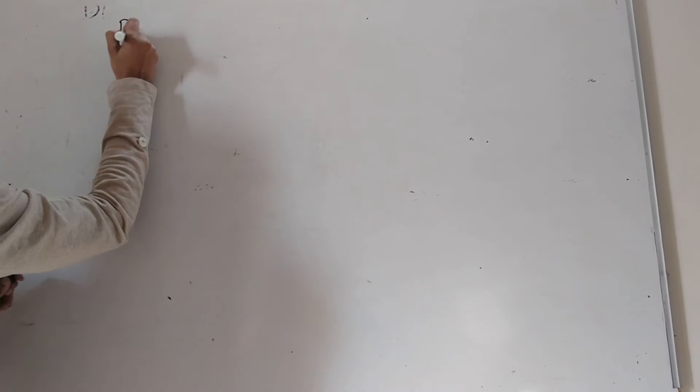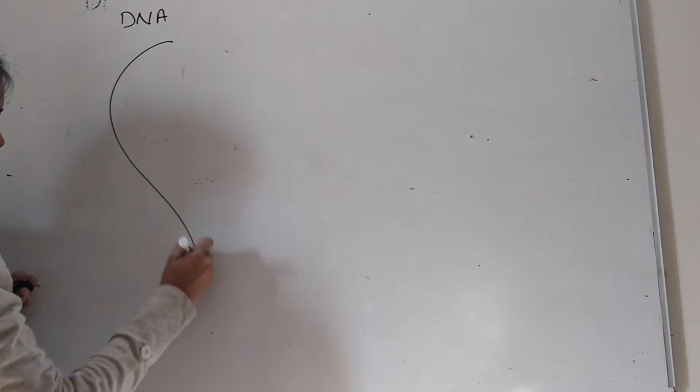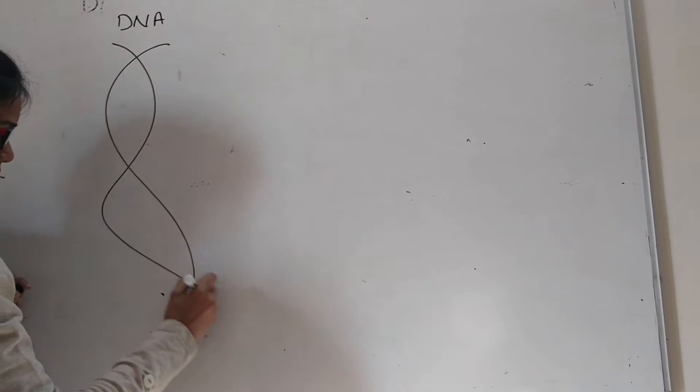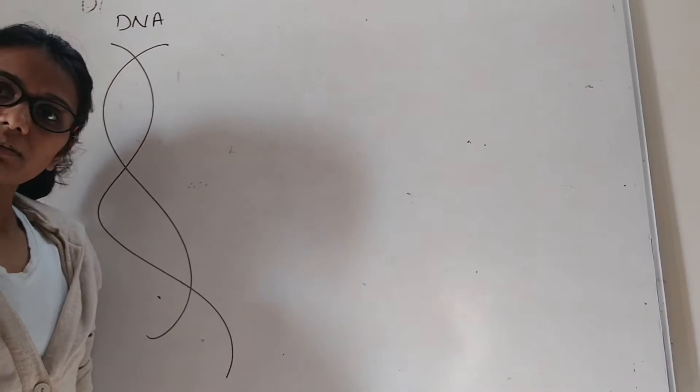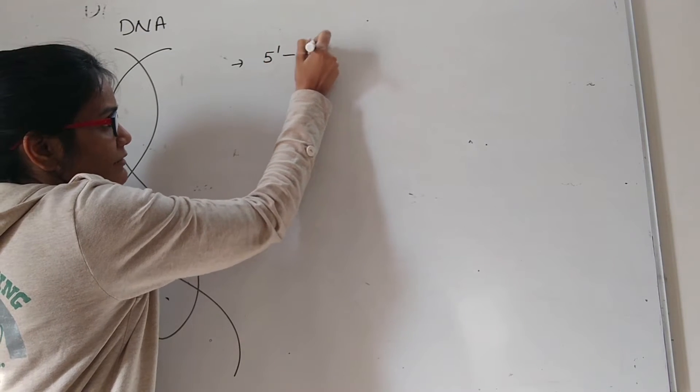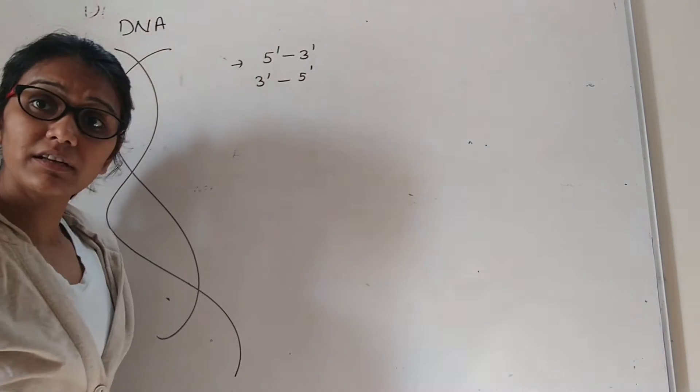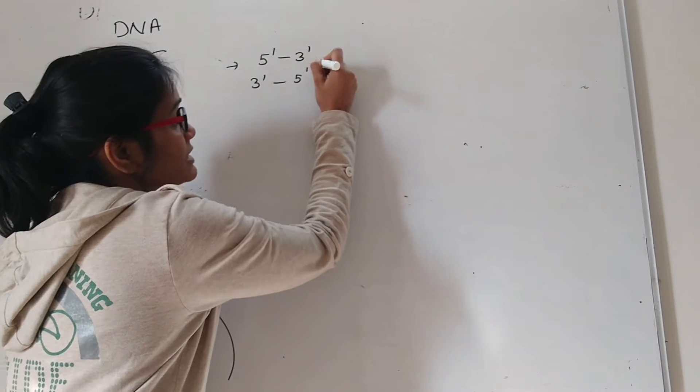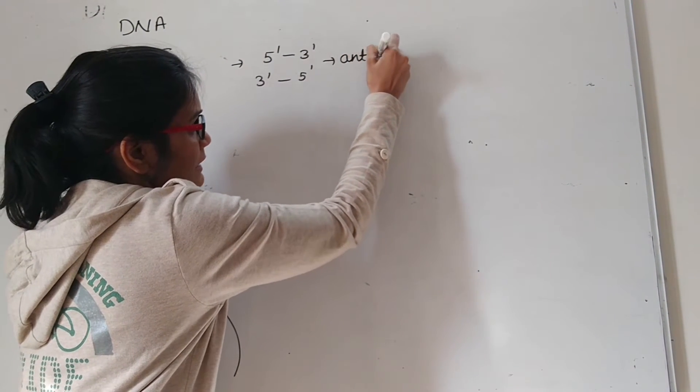DNA is a famous double helical structure. The two strands of the DNA run opposite to each other. One strand runs in 5' to 3' direction and the other strand runs in 3' to 5' direction. This property is called as antiparallel.